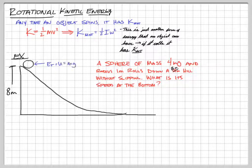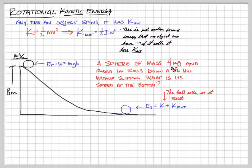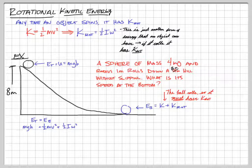Let's look at the top. The energy at the top is just potential energy — it's going to be MGH. Then once we get down to the bottom, my energy is going to be kinetic energy, but it's also rolling without slipping, so that gives me rotational kinetic energy. I have two types of kinetic energy at the bottom. So it must have K-rotational in addition to linear kinetic energy. Conservation of energy says the total energy at any two points is going to be the same, so the energy at the top equals the energy at the bottom: MGH equals one-half MV squared plus one-half I omega squared.